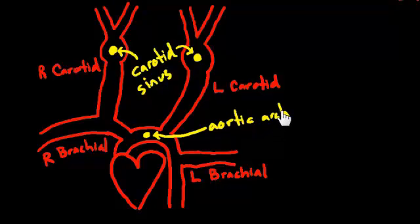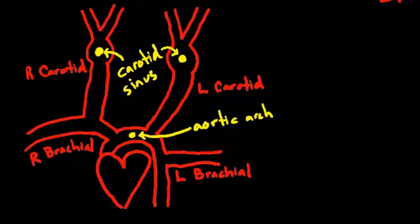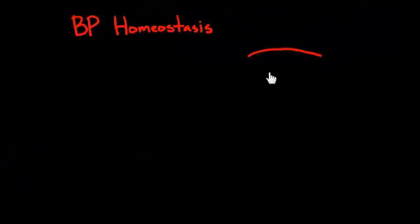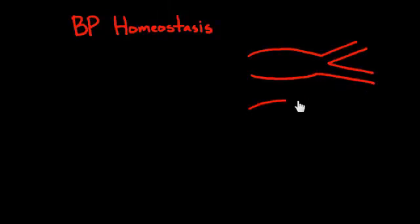So these three spots—the two carotid sinuses and the aortic arch—are really, really interesting. And actually, they're very important for learning about how it is that our body is able to create balance in our blood pressure.